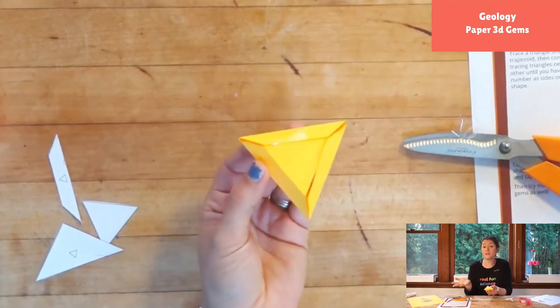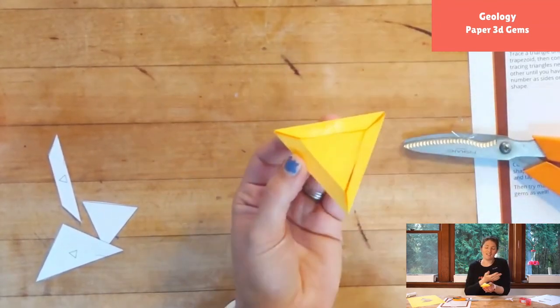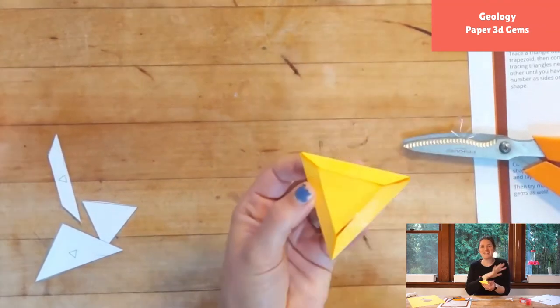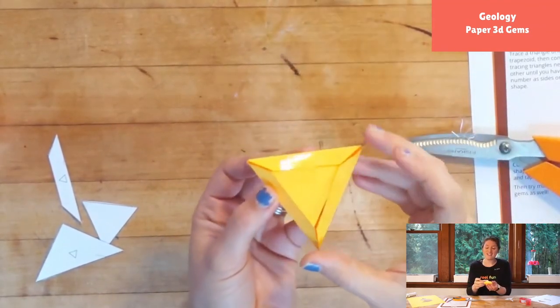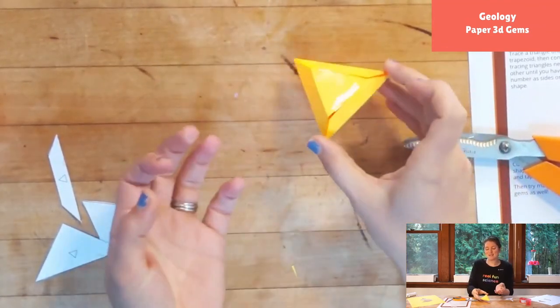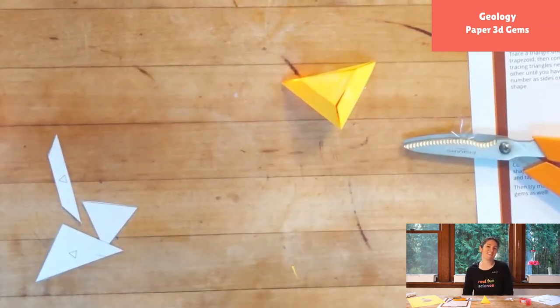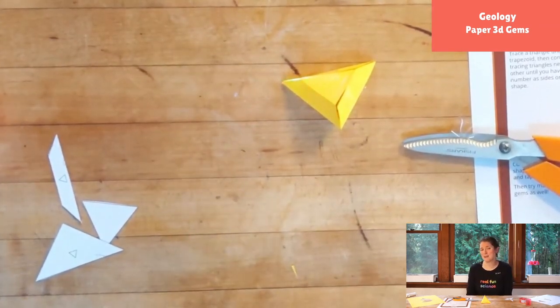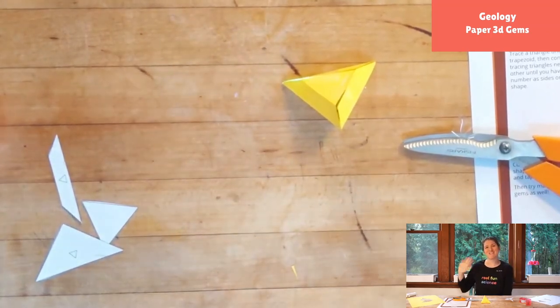And if you're really feeling like you're brave and you've got this, you can do the octagon or you can make your own. You can make a decahedron type of a piece and you can make a huge one if you wanted to. Thank you so much for joining us for this fun little LED 2D to 3D paper gem. We hope you enjoyed it and we will see you next time. Bye, friends.